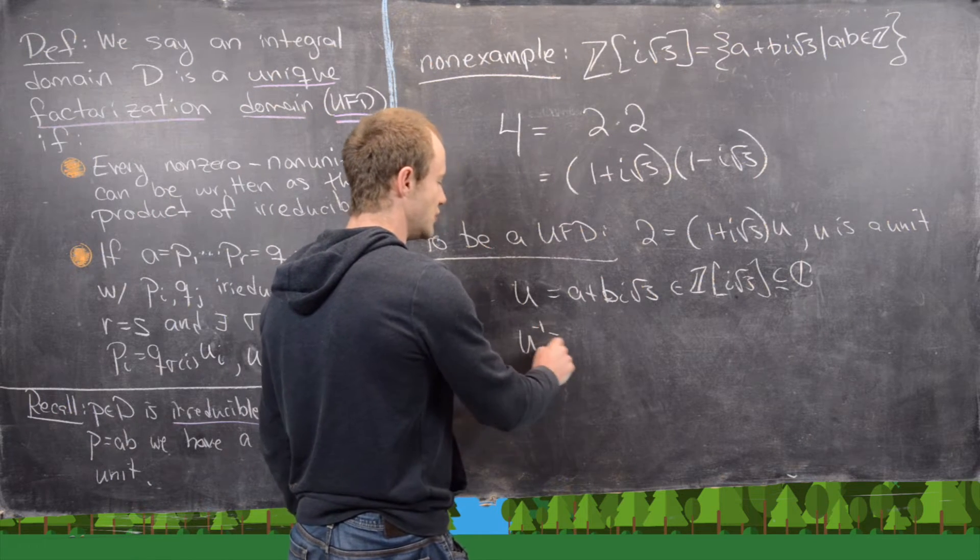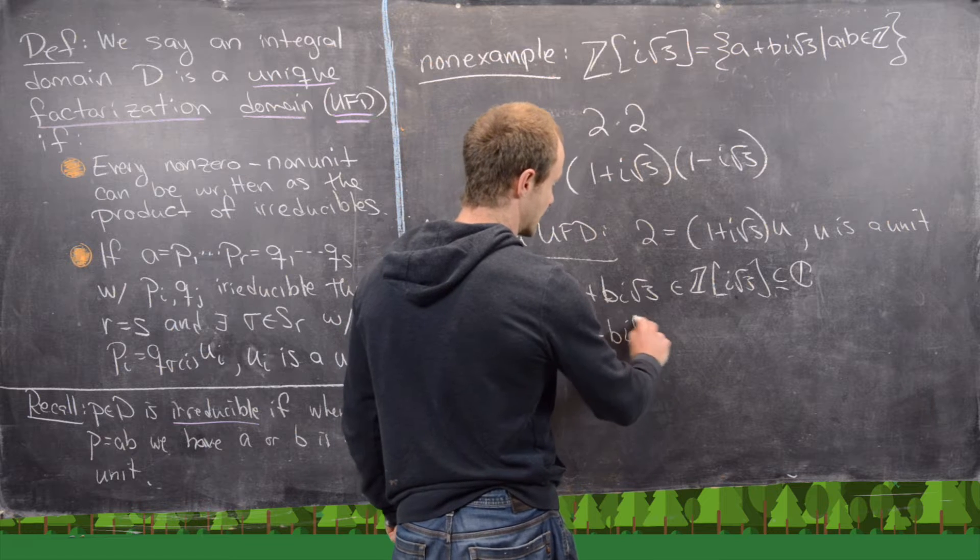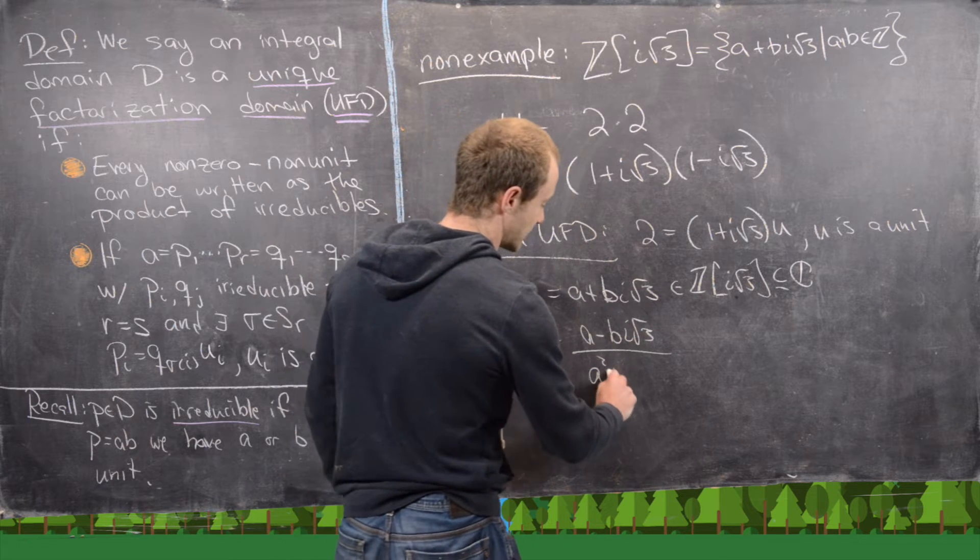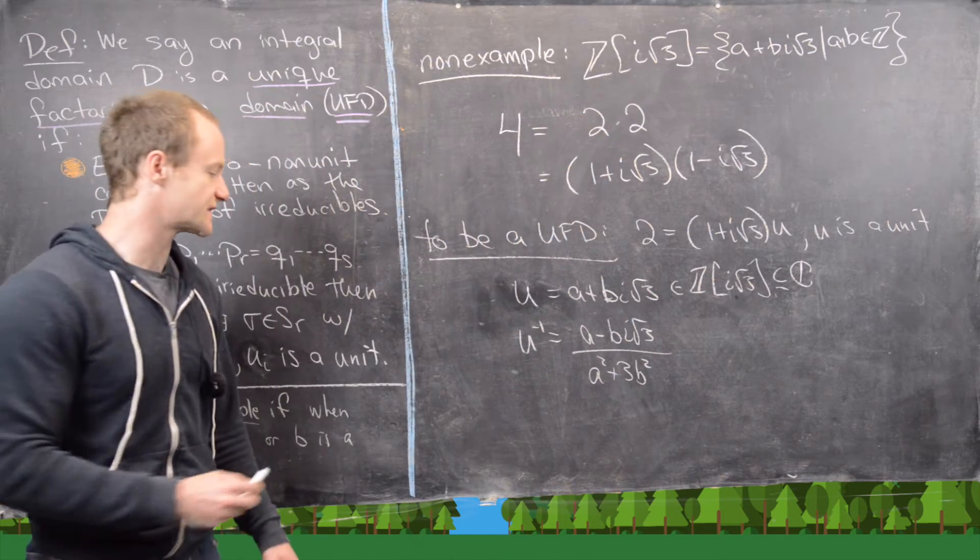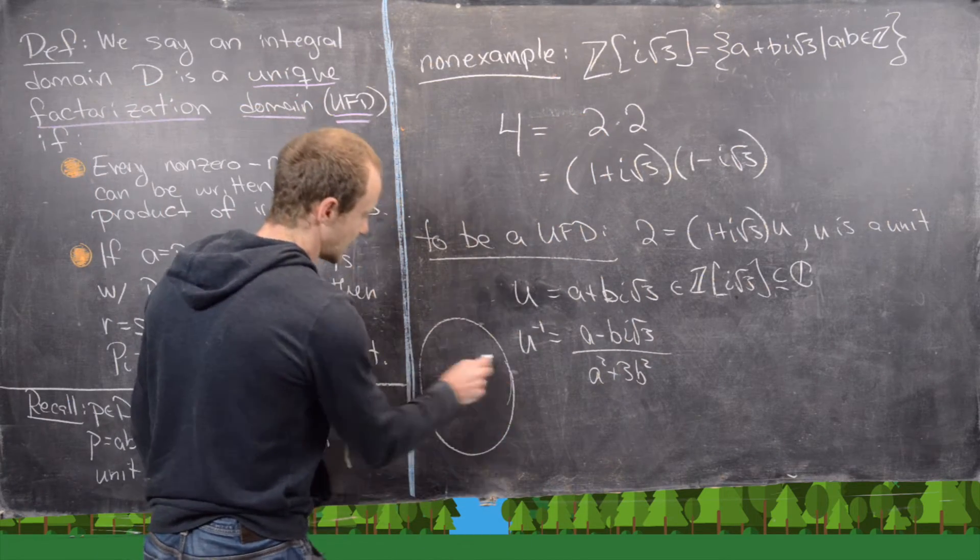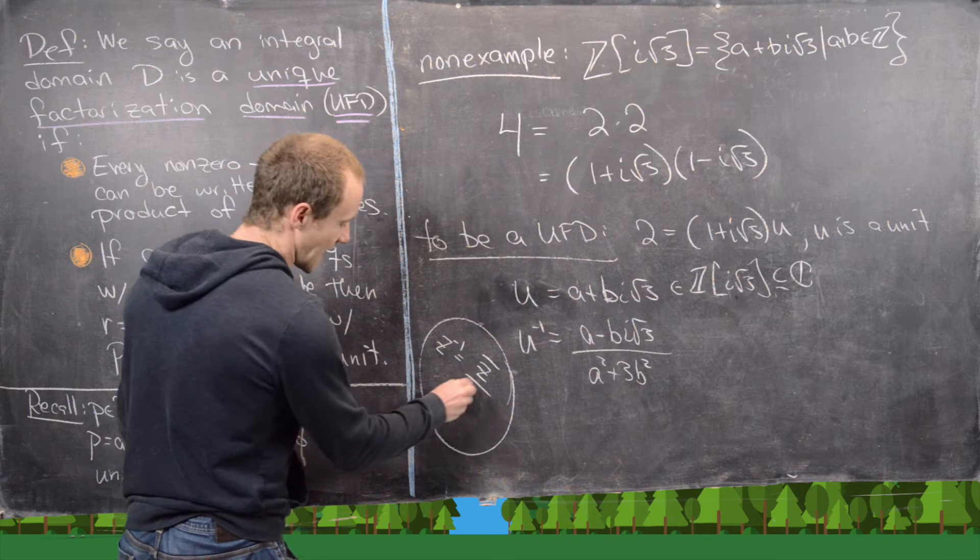So here we write U as A plus B times I root 3. And notice that is within Z adjoin I root 3, which is a subring of the complex numbers.